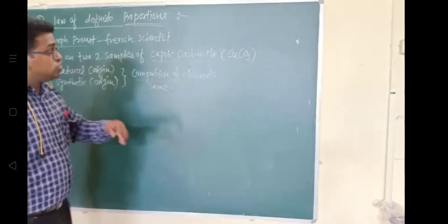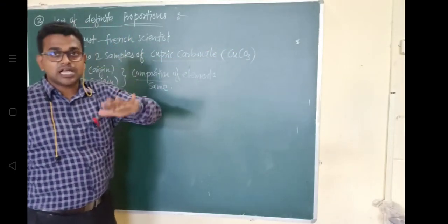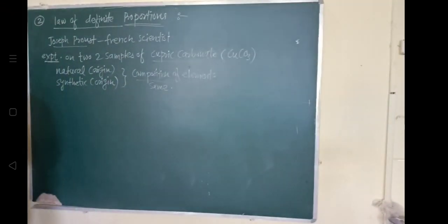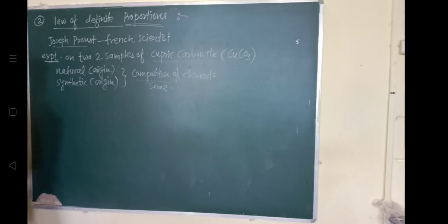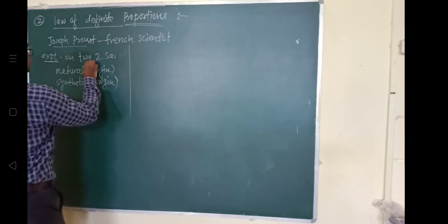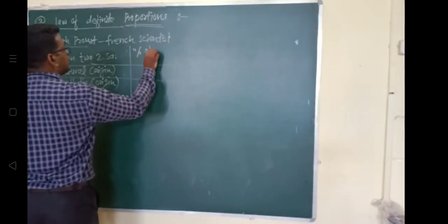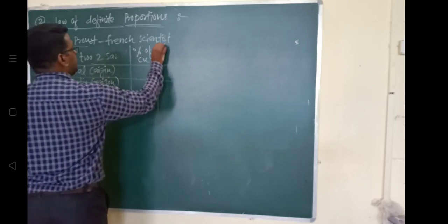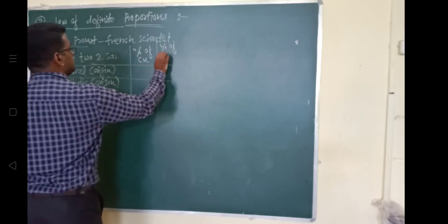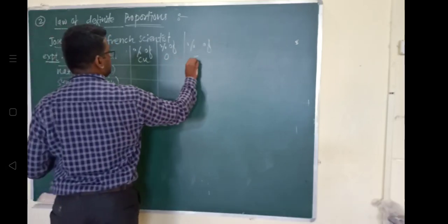The composition — the percentage of copper, the percentage of oxygen, and the percentage of carbon — I will write it here in a table. Natural sample versus synthetic sample: percentage of copper, percentage of oxygen, and percentage of carbon.